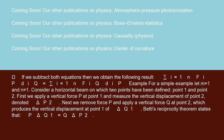For a simple example, let m=1 and n=1. Consider a horizontal beam on which two points have been defined, point 1 and point 2. First, we apply a vertical force P at point 1 and measure the vertical displacement of point 2, denoted δ_P2. Next, we remove force P and apply a vertical force Q at point 2, which produces the vertical displacement at point 1 of δ_Q1. Betti's reciprocity theorem states that P · δ_Q1 = Q · δ_P2.